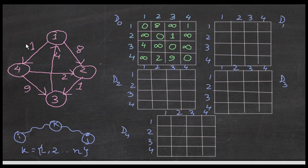Hello everyone. Today we are on to our fifth dynamic programming algorithm tutorial, and this is about the all-pairs shortest path, also known as the Floyd-Warshall algorithm. In algorithms like Bellman-Ford and Dijkstra, we use one pair and relax from that pair, then select another pair. But in Floyd-Warshall, we use all pairs at once and relax them at the same time.